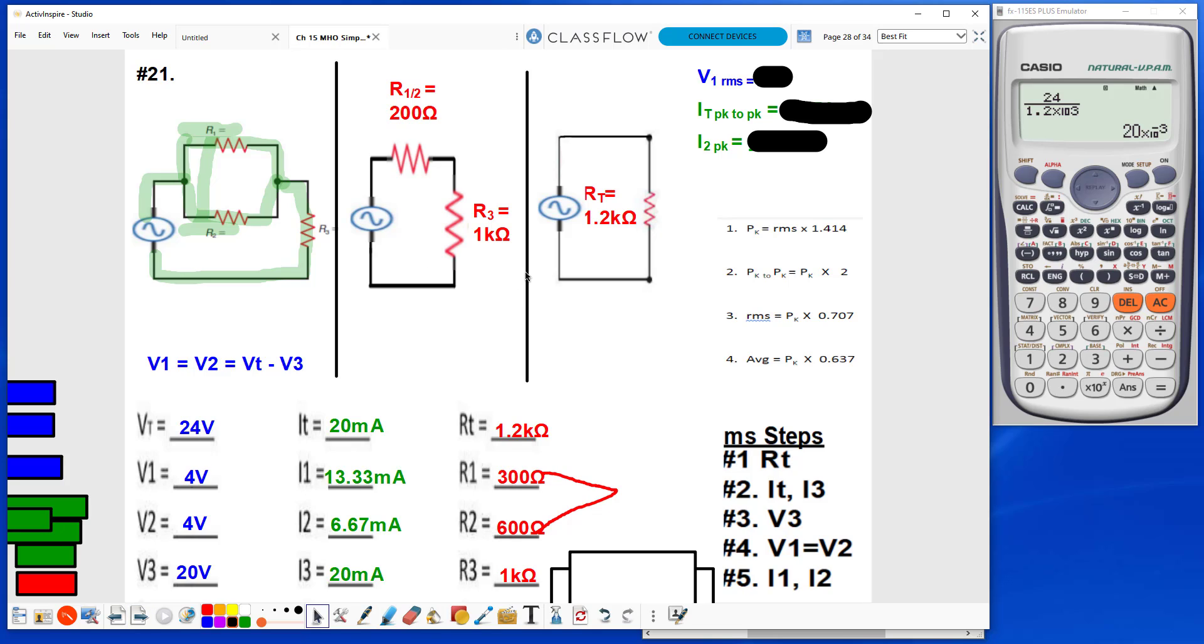All right, now to find my AC values I'm asked for up here. So V1 RMS, well, all of these volts and all of these currents are already in RMS, so V1 RMS would just be the 4 volts listed here.